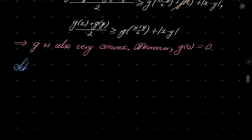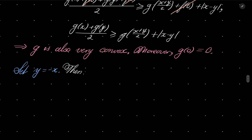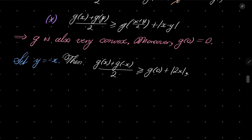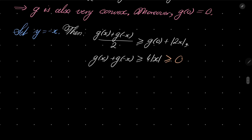Now let's set y = -x in the inequality for g. We get g(x) + g(-x) over 2 ≥ g(0) + |2x|. Since g(0) = 0, this gives g(x) + g(-x) ≥ 4|x|. In particular, this is always greater than or equal to 0 for every x. Let's mark this result — it will be useful later.